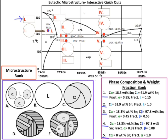You will be given 20 seconds to answer the question, but if you need more time, feel free to pause the video. Here's question 2, at the point 210 degrees Celsius and 8% Sn — still at Roman numeral 1 and this red dot right there — what does the microstructure look like? Your answer would go in this bubble right here, and your choices are A, B, C, D, and E. You will be given 20 seconds to answer this question, but if you need more time, pause the video.